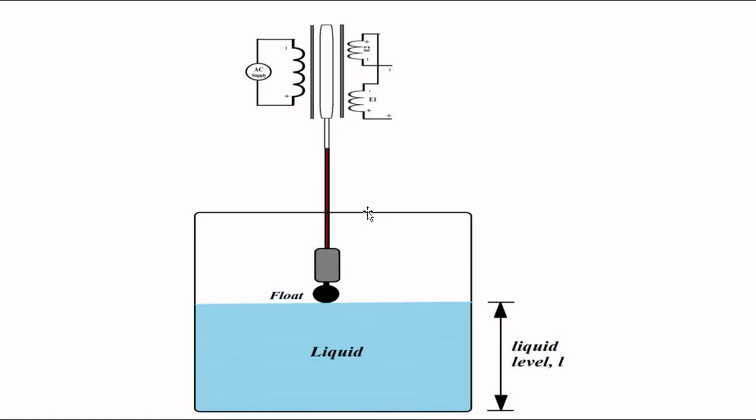Here we have connected to the movable core. It's all about converting the physical parameter under measurement into suitable movement. Here we have converted into displacement the up and down movement of the LVDT to give us an electrical signal.